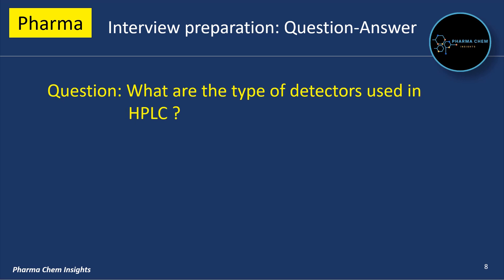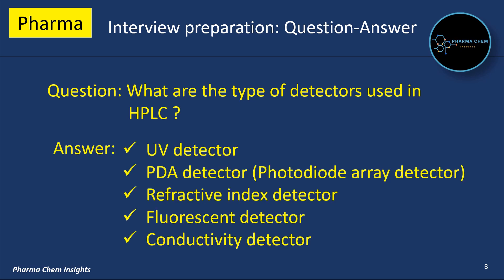Next Question: What are the types of detectors used in HPLC? First is the UV-visible detector, second is the PDA detector called the photodiode array detector, third is the refractive index detector, fourth is the fluorescent detector, and fifth is the conductivity detector.